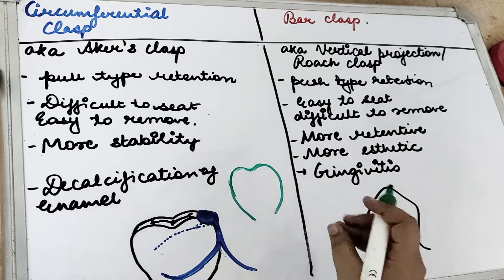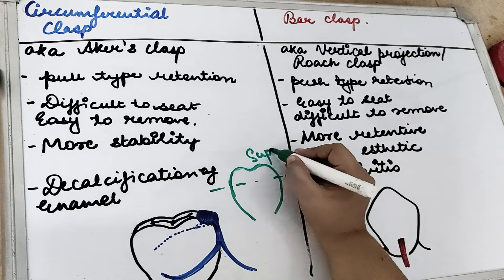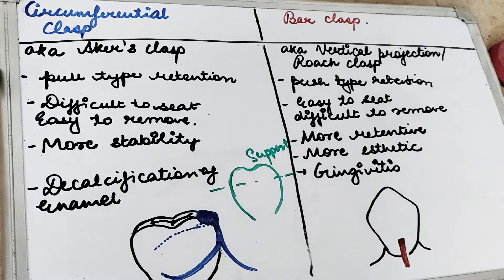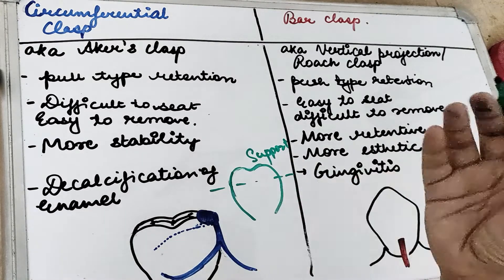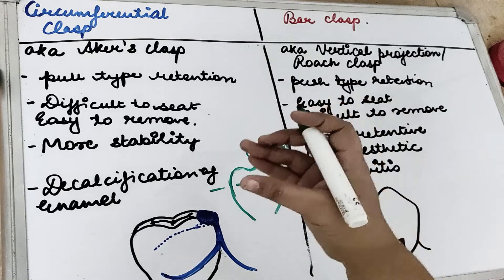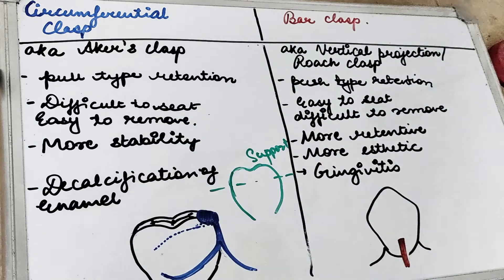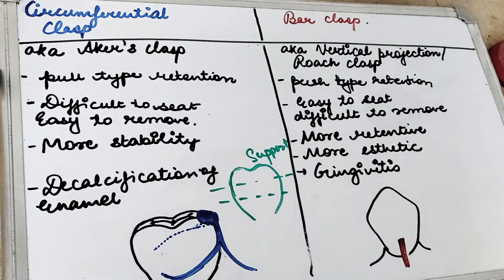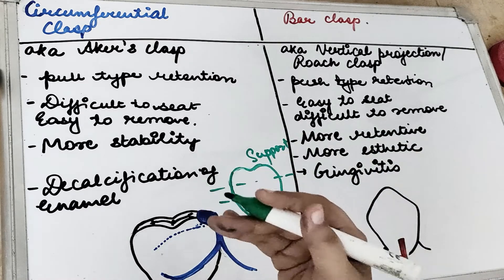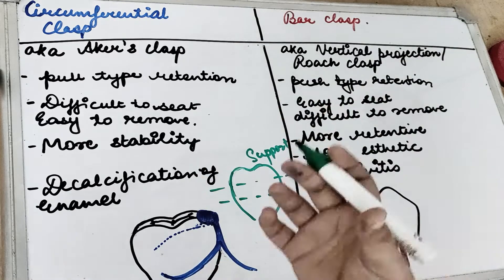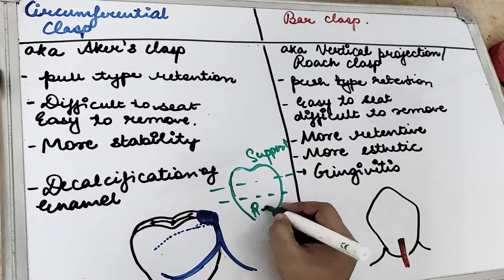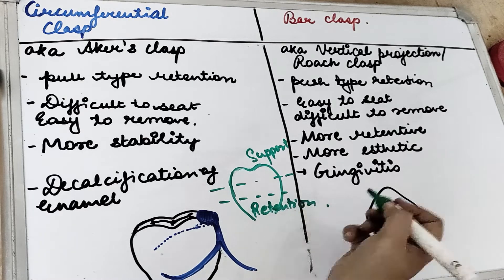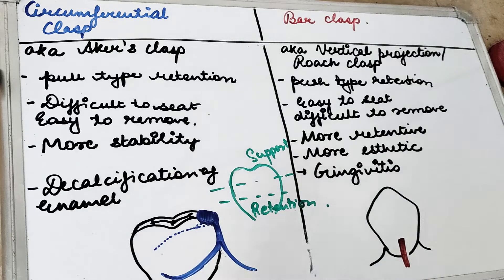This we have already covered. The upper one — the occlusal one third — provides the support. So whatever part of the RPD, either it is a rest or the part of a retentive arm coming from the occlusal one third of the teeth, provides support. The gingival one third provides the retention, and the middle one provides the stability.